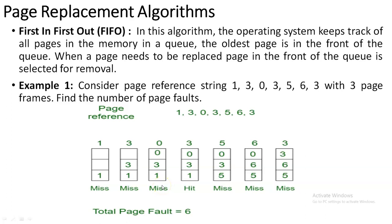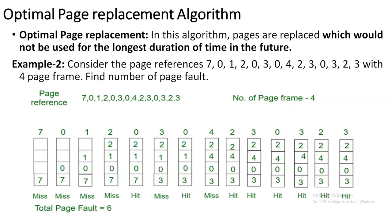The next algorithm is Optimal Page Replacement. In this algorithm, instead of removing the first inserted page, you check which page in the frame will not be used for the longest duration of time in the future. The problem will again give you a string of references and the number of page frames — here the page frame count is four.